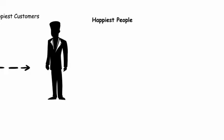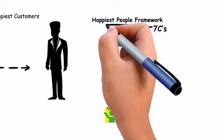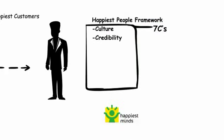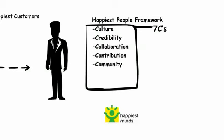So how do we get Happiest People? The Happiest People framework at Happiest Minds is built on seven Cs: Culture, credibility, collaboration, contribution, community, communication, and choice.